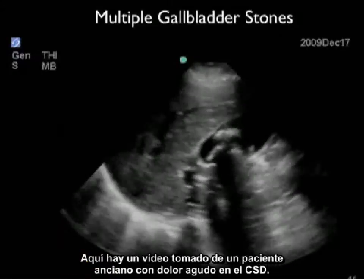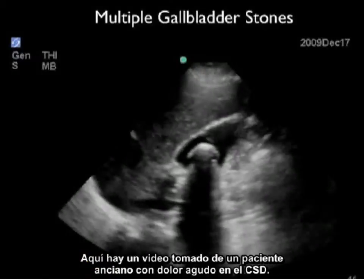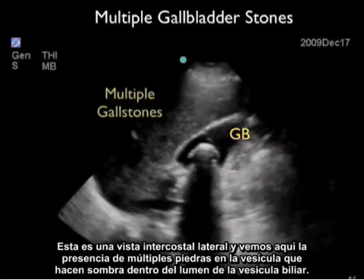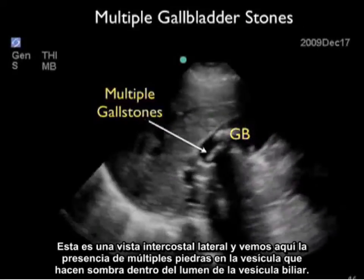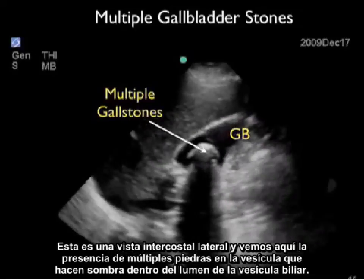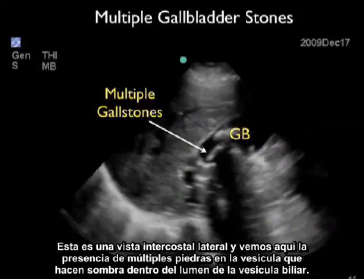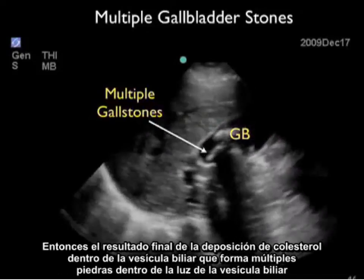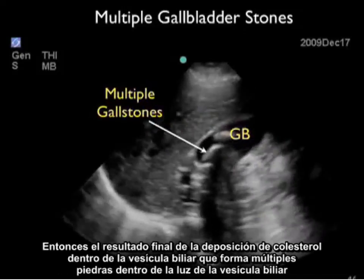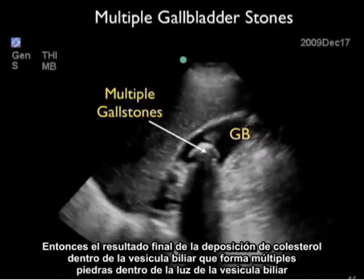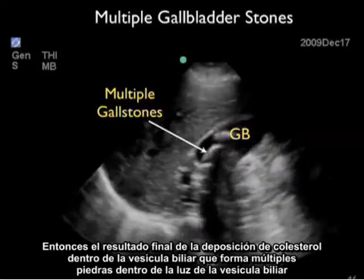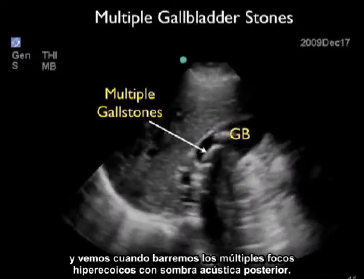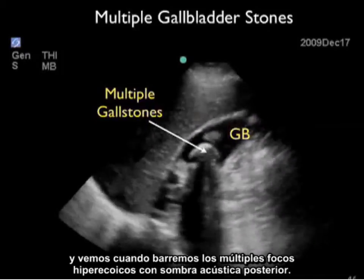Here's a video clip from an elderly patient with acute right upper quadrant pain. We're scanning back and forth through the gallbladder using the lateral intercostal view. We see the presence of multiple shadowing gallstones within the lumen of the gallbladder — the end result of cholesterol deposition forming multiple stones. As we scan back and forth, we see multiple hyperechoic foci with posterior acoustic shadows.